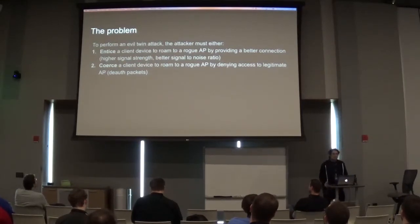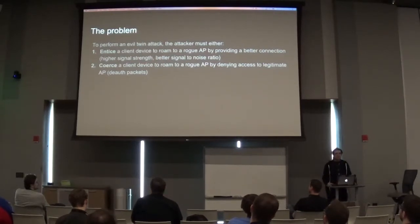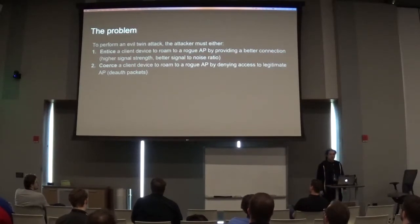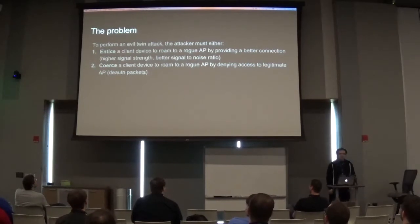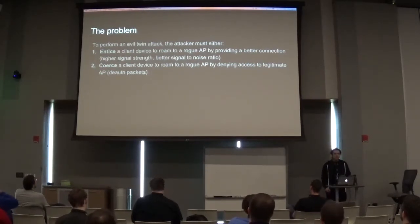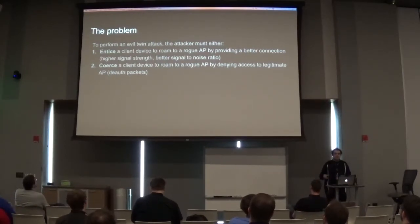There are two ways to perform this attack. The first variation I showed provides a better signal stream — the idea is to entice the client device to roam to your AP by providing a better connection. The more commonly used technique is called coercion: you deny access to the AP the client is connected to, then provide a different access point with the same network name but different BSSID, which causes them to roam.